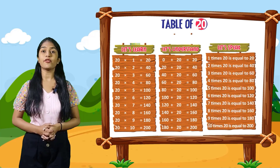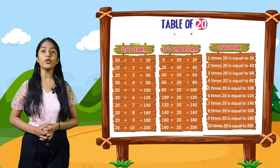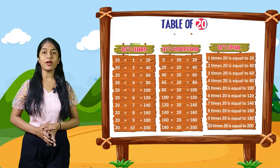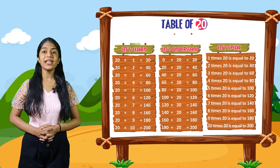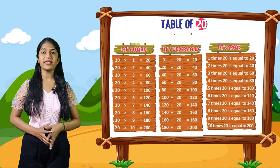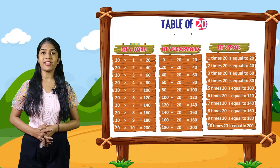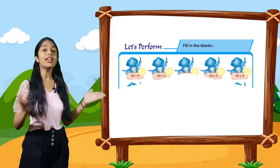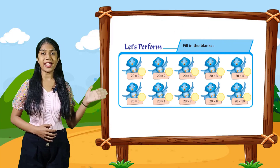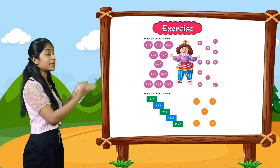So now let's speak. You have to speak out with me. 1 times 20 is equal to 20. 2 times 20 is equal to 40. 3 times 20 is equal to 60. 4 times 20 is equal to 80. 5 times 20 is equal to 100. 6 times 20 is equal to 120. 7 times 20 is equal to 140. 8 times 20 is equal to 160. 9 times 20 is equal to 180. 10 times 20 is equal to 200. So now let's perform. Fill in the blanks.